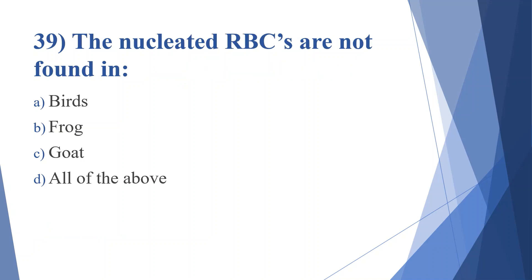Thirty-ninth question: the nucleated RBCs are not found in. Option A: birds. Option B: frog. Option C: goat. Option D: all of the above. Answer is option C, goat.